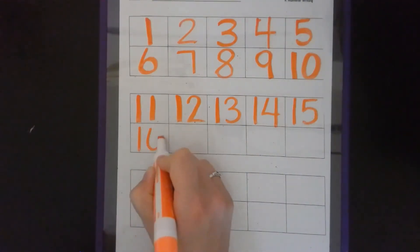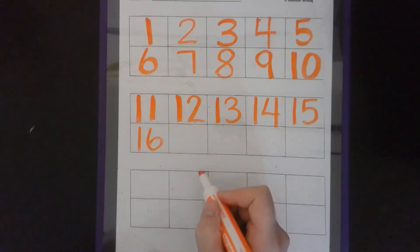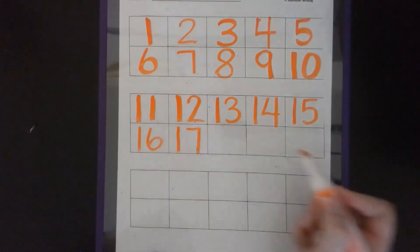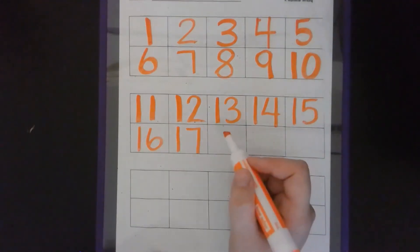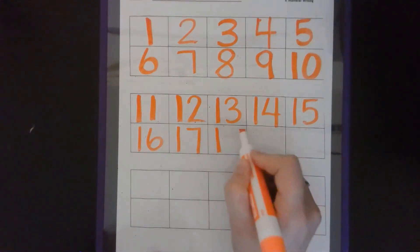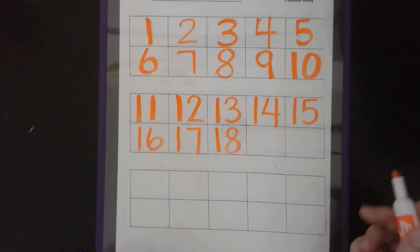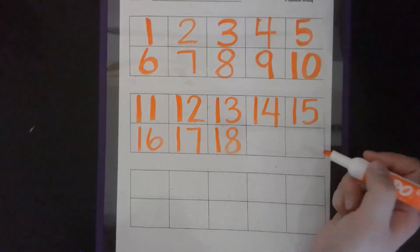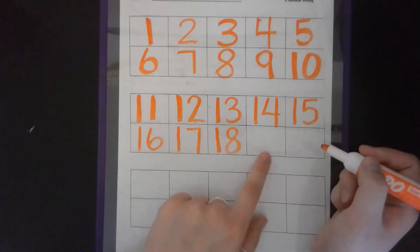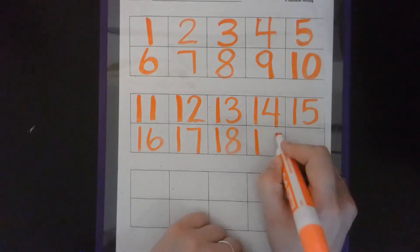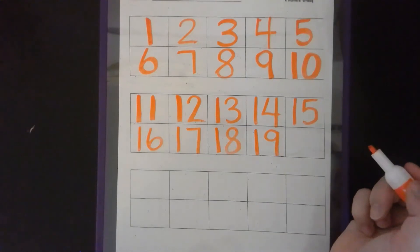17, one and seven. Now, we have 18, which is a one and an eight. I'm going to take my time, go really slow, making that S and going right back up. Nice. Now, we have 19, which is a one and a nine. All right, there are all my teen numbers.